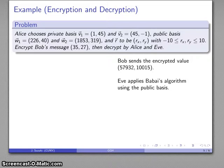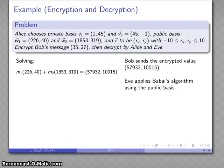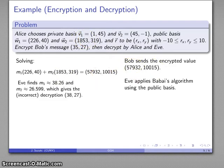We can still apply Babai's algorithm and try to recover the coefficients of the linear combination that produced something close to this. And so she looks for a linear combination of the public basis vectors. And when she solves that, she finds that M1 is about 38.26 and M2 is 26.59.